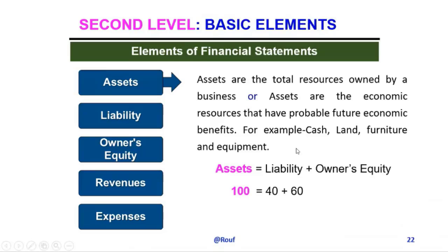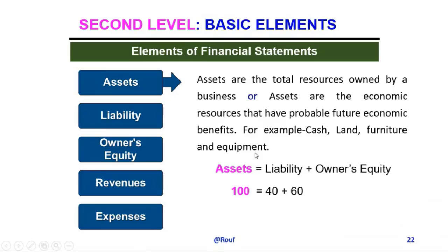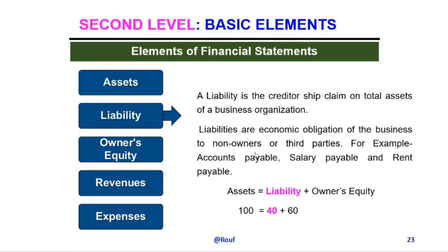Assets are created by two ways: number one, the owner; number two, liabilities. The owner invested money as capital — this is called owner's equity. But every human being has a limitation of finance, so at that time he or she borrows money from other parties and invests it in the business organization — this is called liabilities. These two sources create total assets. So assets are the total resources of any business organization.